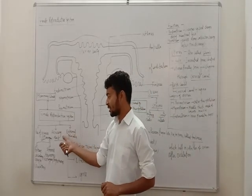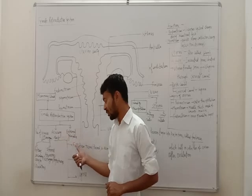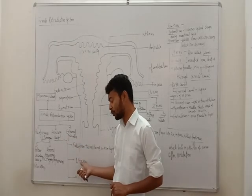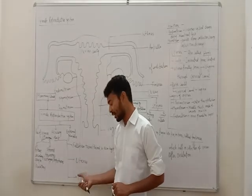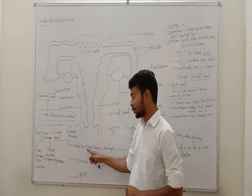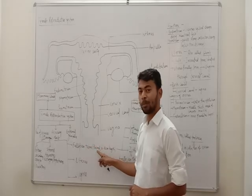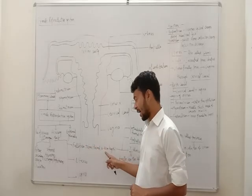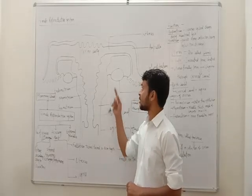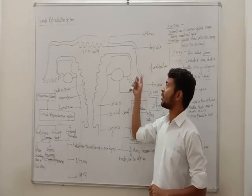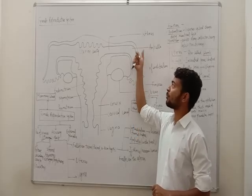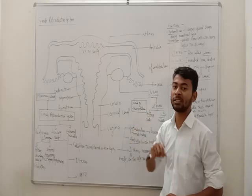Next is the accessory duct. Three parts are included in the accessory duct: first is the fallopian tube, second is the uterus, and third is the vagina. The fallopian tubes are paired structures with a length of 10 to 12 cm. The fallopian tube has three parts: infundibulum, ampulla, and isthmus.